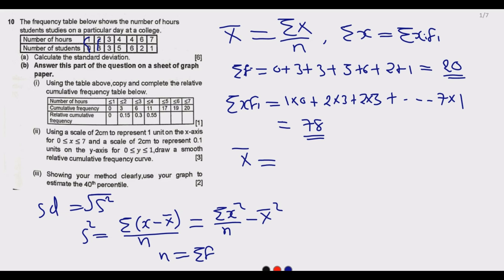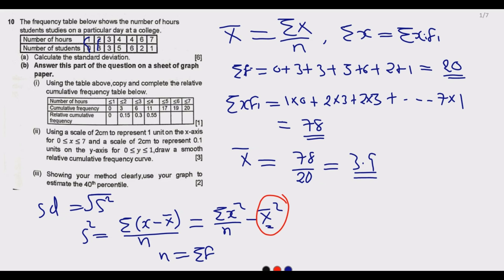So our mean x̄ = 78 divided by 20, which gives us 3.9 hours. On average, these students study about 3.9 hours at this college. Remember, in Paper 2 the calculator is allowed. Now we know the mean and n, so we can proceed with the variance formula.